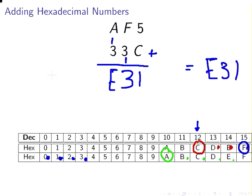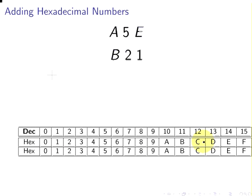Okay, so let's move on to the next one. E, 5, E, and B, 2, 1. Well, we're going to start off. This one is fairly easy to get going. So E and 1, that's simply F. It's just the next one after that. 5 and 2, that's 7.